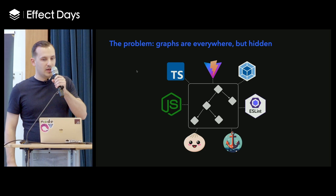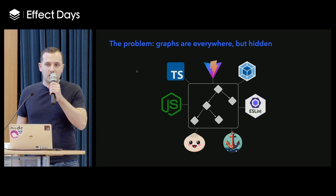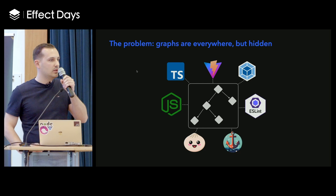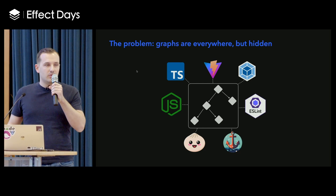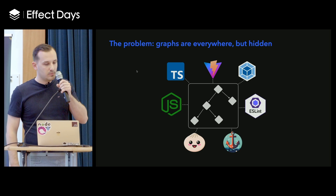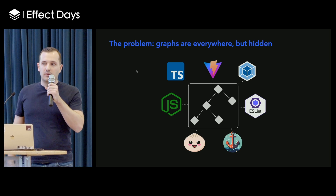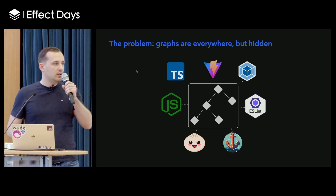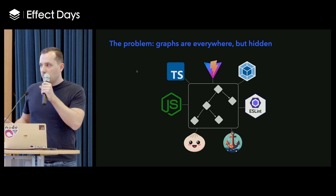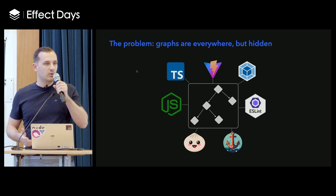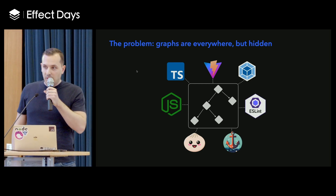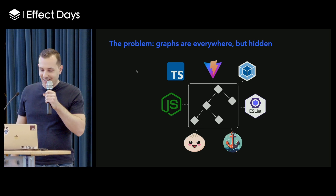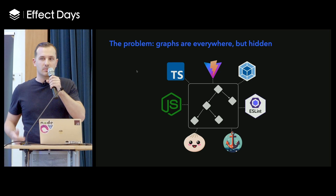The problem I want to talk about today is related to graphs. When I'm talking about graphs, I'm talking about graph data structures that are used in most computer systems. We have them in databases, runtimes, compilers, and even the tooling that we use on a daily basis. Basically, the problem is that these graphs are super powerful, but most of the time they are hidden. They are kind of abstracted in implementation details in a way that doesn't really allow developers to build tools on top of them or fully use them. I find it a shame to not be able to fully use them.